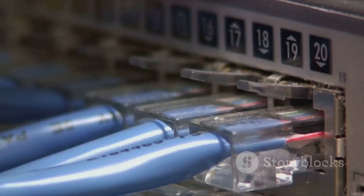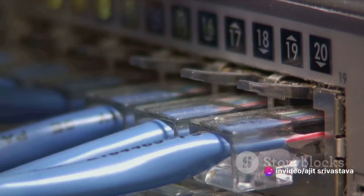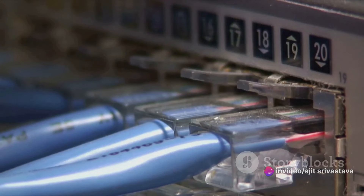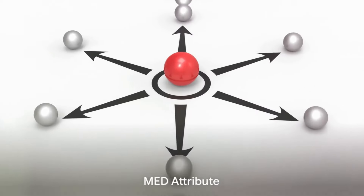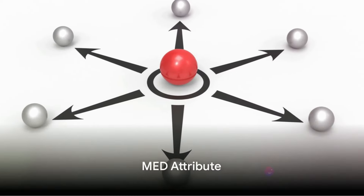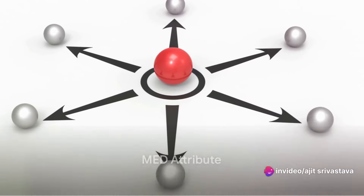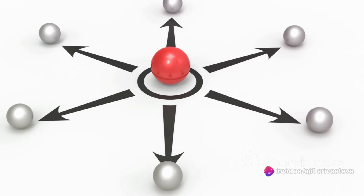Then comes the local preference. This attribute tells the router which path to prefer when sending data out to the internet — higher values take precedence. For instance, if a network has two routers A and B, and router A has a local preference of 200 while router B has a local preference of 100, router A will be preferred.